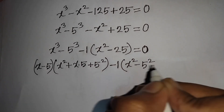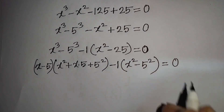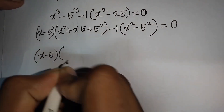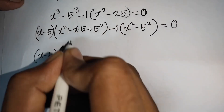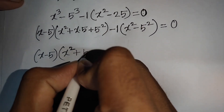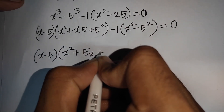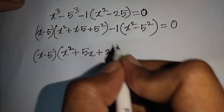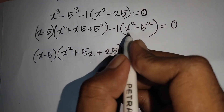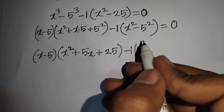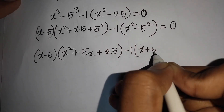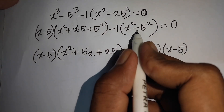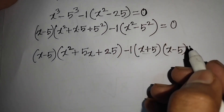Minus 25 can be written as minus 5², bracket close, equals 0. Now we have (x minus 5) times (x² + 5x + 25). We can apply the formula for a² minus b² to the remaining term, writing it as (x + 5)(x minus 5), where a is x and b is 5, equals 0.